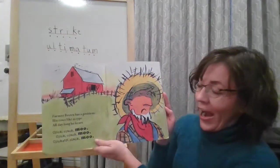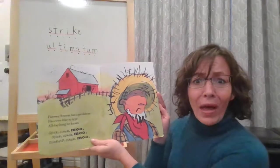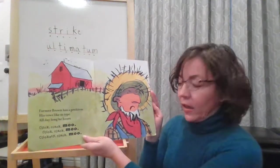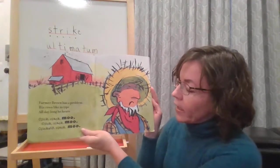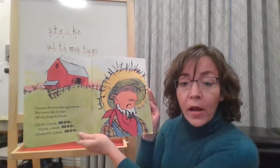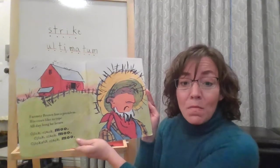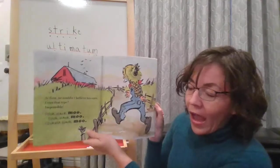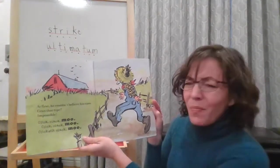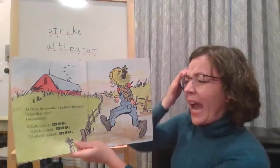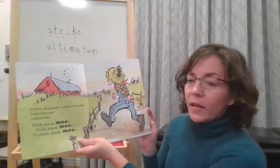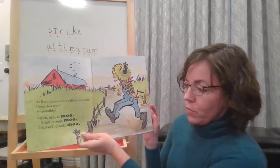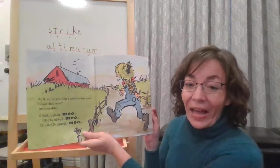Farmer Brown has a problem. His cows like to type. All day long he hears click clack moo. Click clack moo. He doesn't look happy about that. At first he couldn't believe his ears. Cows That Type. Impossible. Click Clack Moo. Click Clack Moo. Click Clack Moo. Clickety Clack Moo.